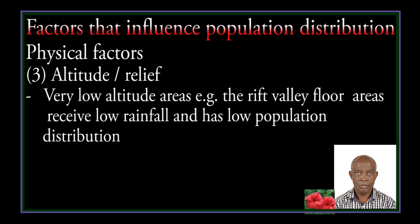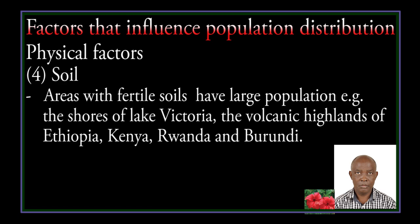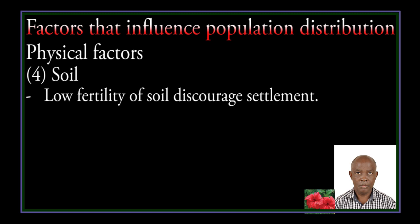Very low altitude areas, for example rift valley floor areas, receive low rainfall and have low population distribution. Areas with fertile soil have high population — for example, the soils of Lake Victoria, the volcanic highlands of Ethiopia, Kenya, and Rwanda. Low fertility of soil discourages settlement.